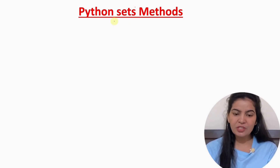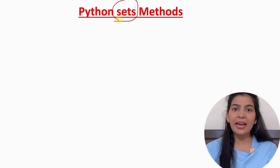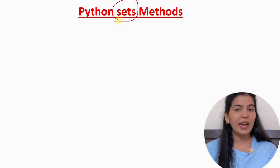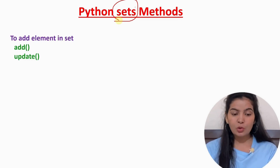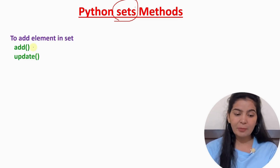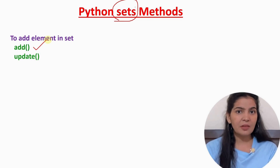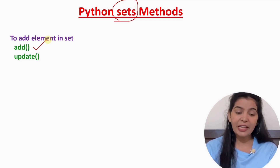In the last video, I told you sets are mutable. That means we can add elements to the set, and we can also remove elements from the set. So, first let's see some methods that we can use to add elements to a set. There are two methods available. The first is the add method, which we can use to add only one element at a time. But if we want to add more than one element — say three, four, or five elements at a time — in that case, we can use the update method.